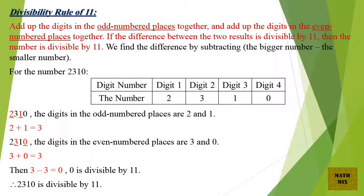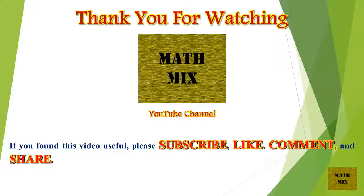The digits in the odd numbered places are 2 and 1. 2 plus 1 equals 3. The digits in the even numbered places are 3 and 0. 3 plus 0 equals 3. Then 3 minus 3 equals 0. 0 is divisible by 11. Therefore, 2310 is divisible by 11.